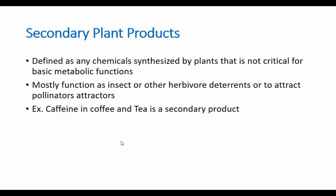Secondary plant products — you've already encountered these when we talked about caffeine. These are chemicals that are not critical for the plant to stay alive, but help the plant survive by interacting with other species. For example, they can act as insecticides, or they can attract pollinators through scent.